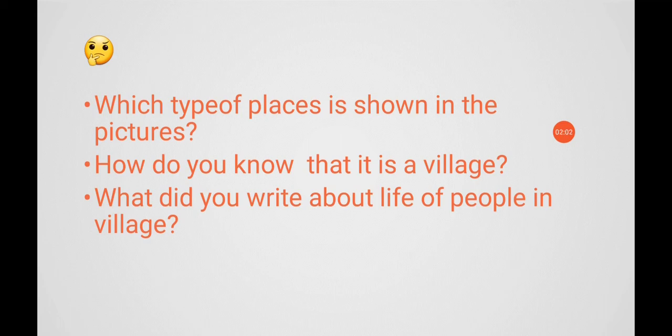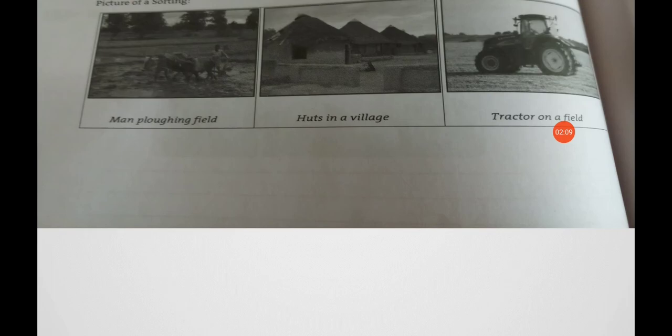How do you know that it is a village? Most people in villages do farming. Here a man is ploughing a field. Most people in villages do farming. A village has fields ploughed by bullocks or tractors. People mostly live in houses made of mud — here it is a hut made of mud.